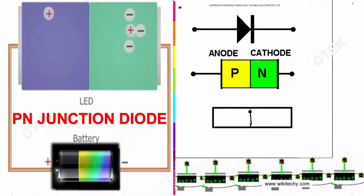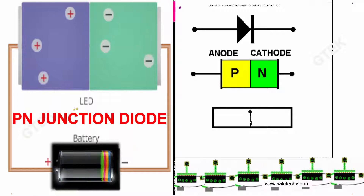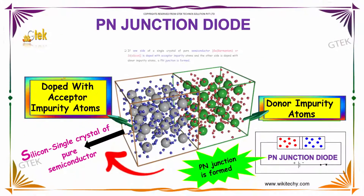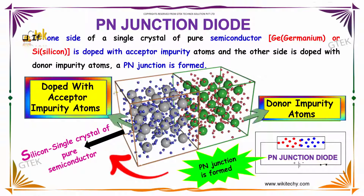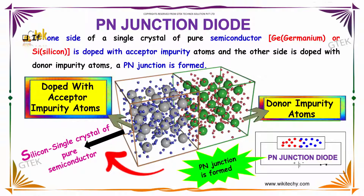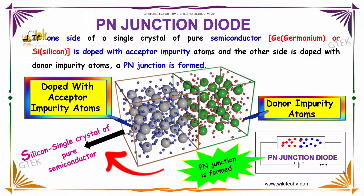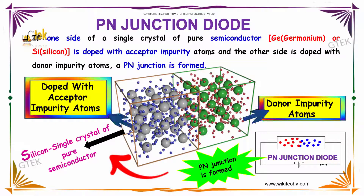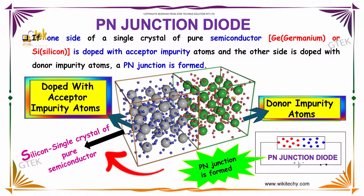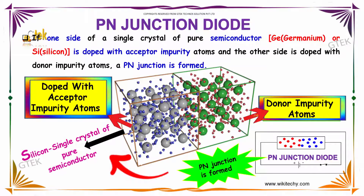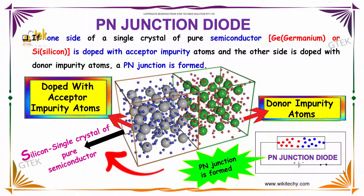Here is your PN junction diode. This is how it will work. If one side of a single crystal of pure semiconductor germanium is doped with the acceptor impurity atoms and the other side is doped with the donor impurity atoms, we got a PN junction.